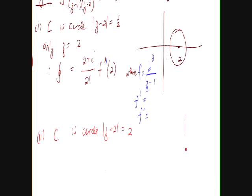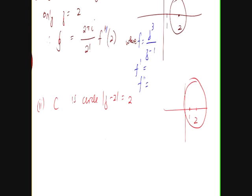This time, if you draw a picture, again, the center is at 2. This time, the radius is big enough to go around 1. So, you have two points in the contour.